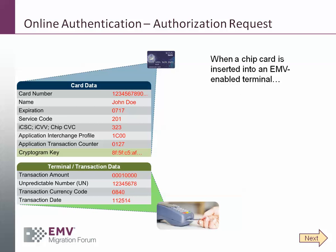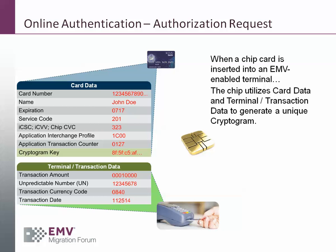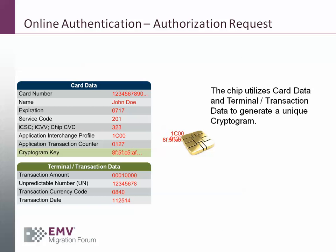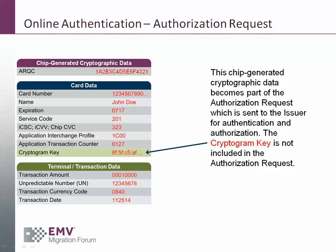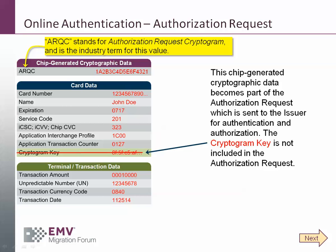When a chip card is inserted into an EMV-enabled terminal, there is data associated with that specific transaction from both the card and the terminal. The chip will utilize certain card data and certain terminal and transaction data to generate a unique cryptogram. This cryptogram is then included in the authorization request. Note that the cryptogram key is not included in the authorization request. This cryptogram value is known as the ARQC — the Authorization Request Cryptogram — and we'll use that term throughout this presentation.